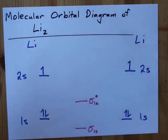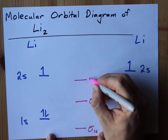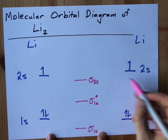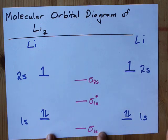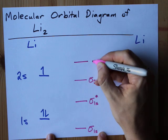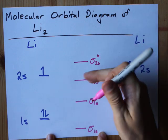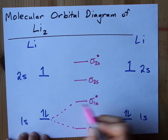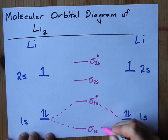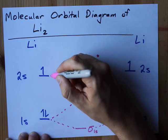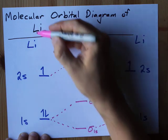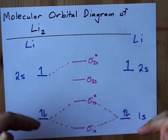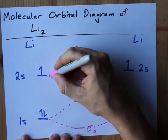When the two 2s orbitals overlap, you get a similar thing: a sigma 2s bonding orbital at a slightly lower energy than each of the corresponding 2s orbitals, and a sigma 2s antibonding orbital at a slightly higher energy. I like putting dotted lines in here to show that it's the 1s orbitals that are contributing to each. Now this one's pretty easy because they're both Li atoms, so the 1s orbitals have the same energy to start with, and the 2s orbitals have the same energy to start with.